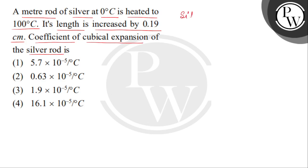Children, given us a silver rod of 1 meter long at 0 degree Celsius. So we can write at 0 degree Celsius L0, that is the length at 0 degree, is equal to 100 centimeter. Now this temperature is increased by 100 degree Celsius. So at 100 degree Celsius the length becomes L100 equals to 100.19 centimeter.